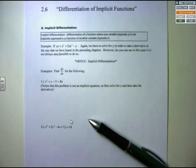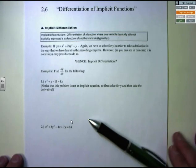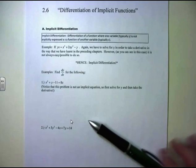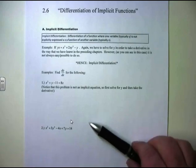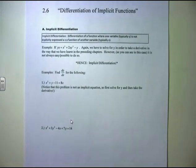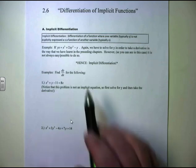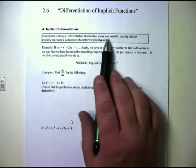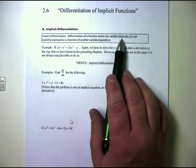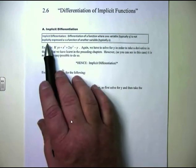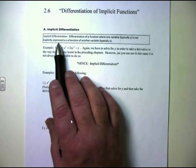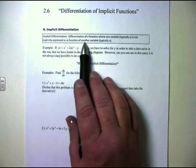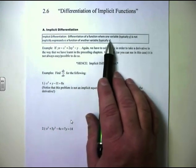Welcome back. We're now starting section 2.6, which is differentiation of implicit functions. Implicit differentiation is the differentiation of a function where one variable, typically y, is not explicitly expressed as a function of another variable, typically x.